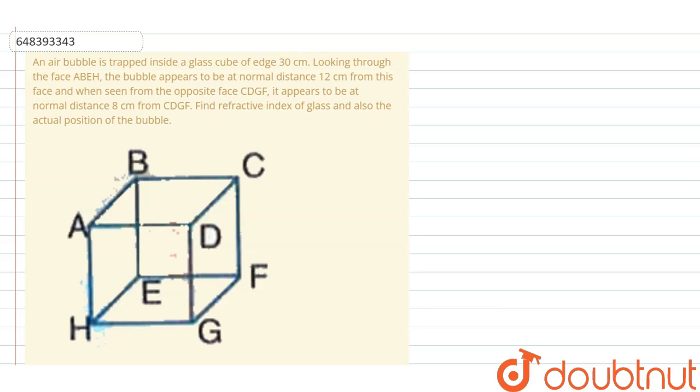Hello everyone, in the question it is given that an air bubble is trapped inside a glass cube of edge 30 cm. Looking through the face ABEH, the bubble appears to be at normal distance 12 cm from this face. When seen from the opposite face CDGF, it appears to be at normal distance 8 cm from CDGF. Find refractive index of glass and also the actual position of the bubble.